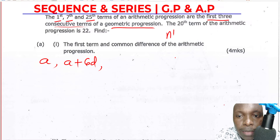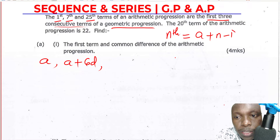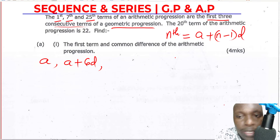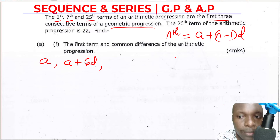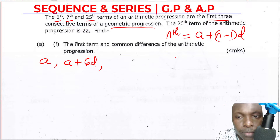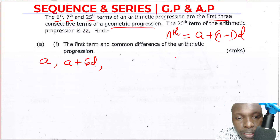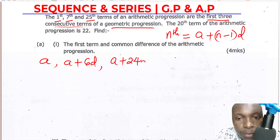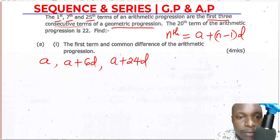The nth term of an arithmetic progression is given by A plus (N minus 1)D, where A is the first term, N is the position of the term, and D is the common difference. So the seventh term is A plus 6D (substituting N=7), and the twenty-fifth term will be A plus 24D.